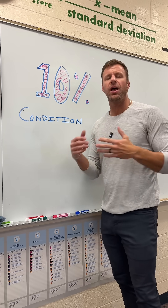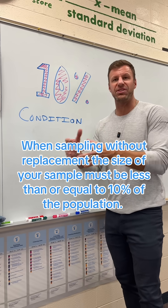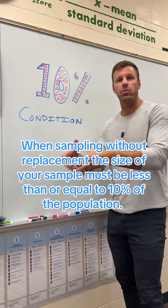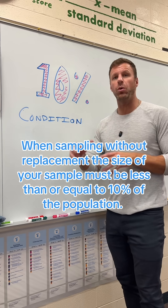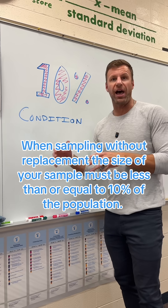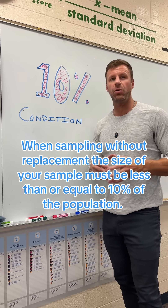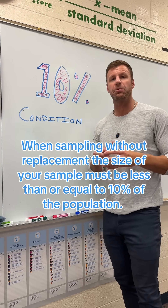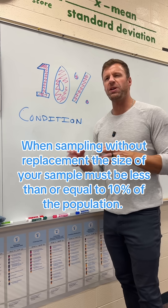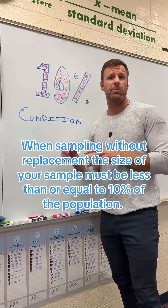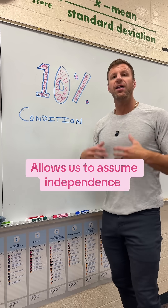So what is it? The 10% condition simply says that the sample size you remove from a population when you are sampling without replacement must be less than or equal to 10% of the population, which means we don't want our sample to be too big — we want it to be under 10% of the population.